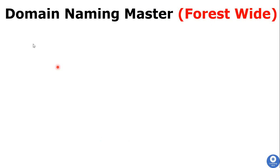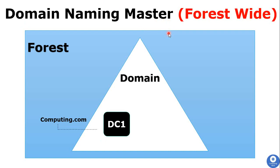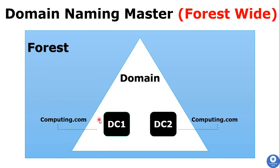Next is Domain Naming Master, which is also a forest-wide role. This role ensures that you don't create a second domain in the same forest with the same name. For example, if you have deployed a domain controller with the domain computing.com, this role prevents another domain controller from using the same name. This role is also used for renaming a domain or moving a domain within the forest, and it is responsible for adding or removing domains from the forest.